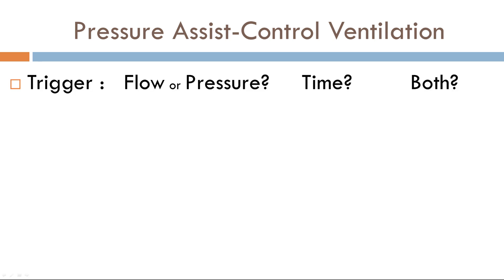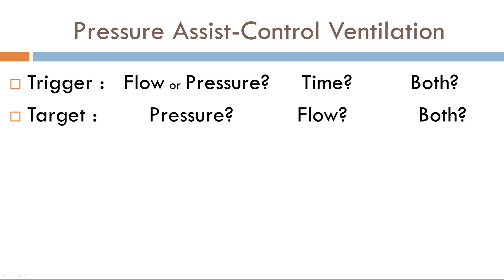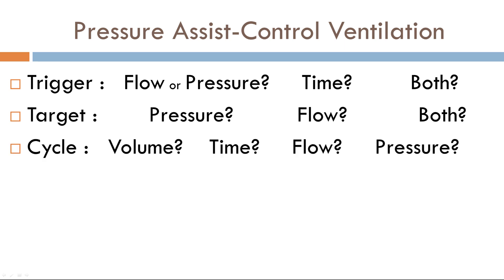Three questions for you: What is the trigger variable — is it flow, pressure, time, or both? What is the target variable — is it pressure, flow, or both? What is the cycle variable — is it volume, time, flow, or pressure? Pause the video now. Okay, pressure assist-control ventilation — what is the trigger variable? A lot is said in the name.